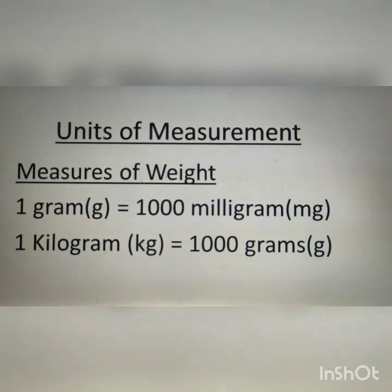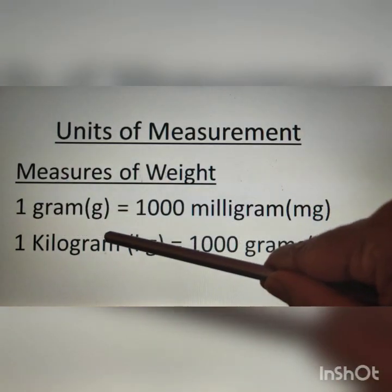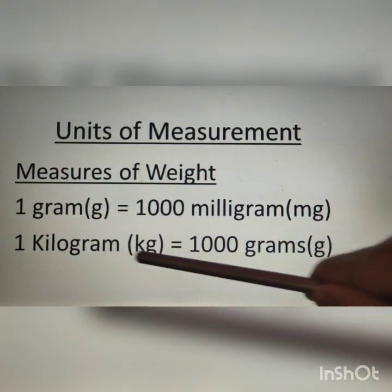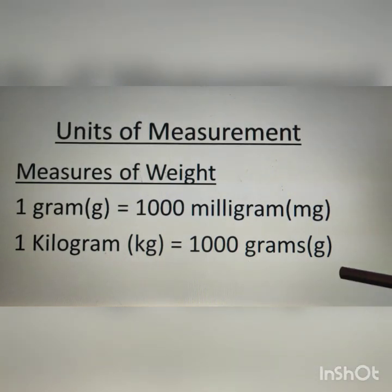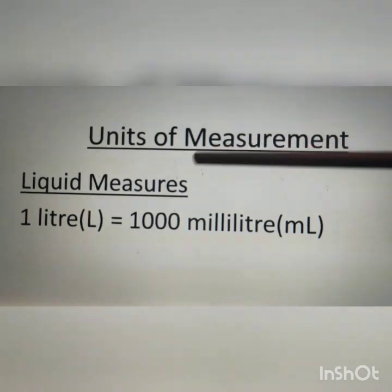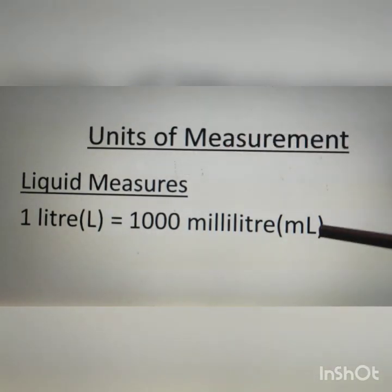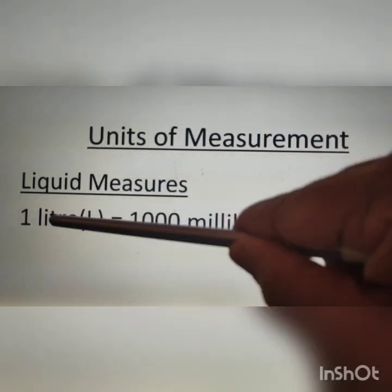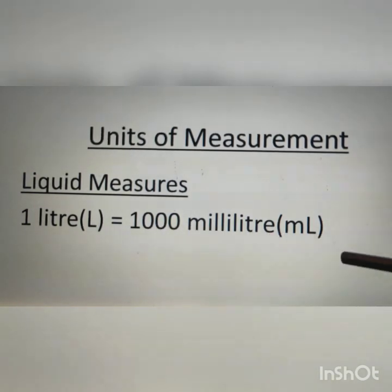Weights are measured in milligram, gram, and kilogram. 1 gram is equal to 1000 milligrams. 1 kilogram is equal to 1000 grams. Liquid is measured in milliliter and liter. 1 liter is equal to 1000 milliliters.